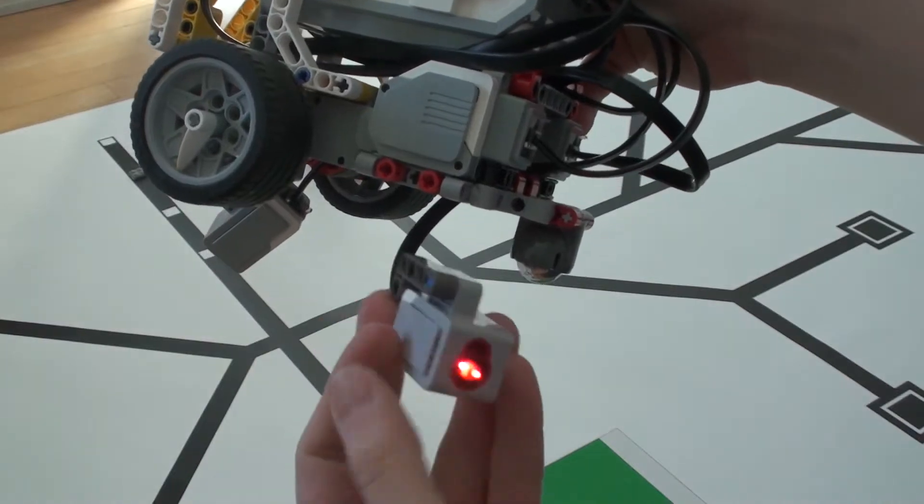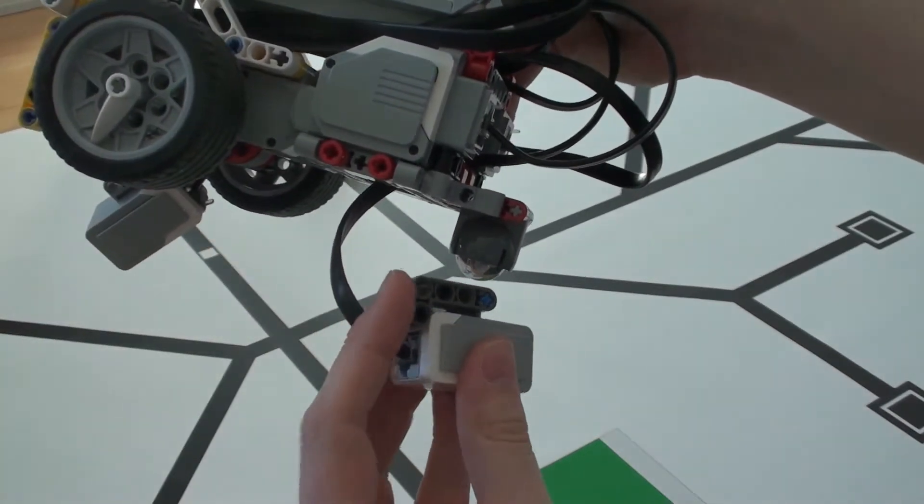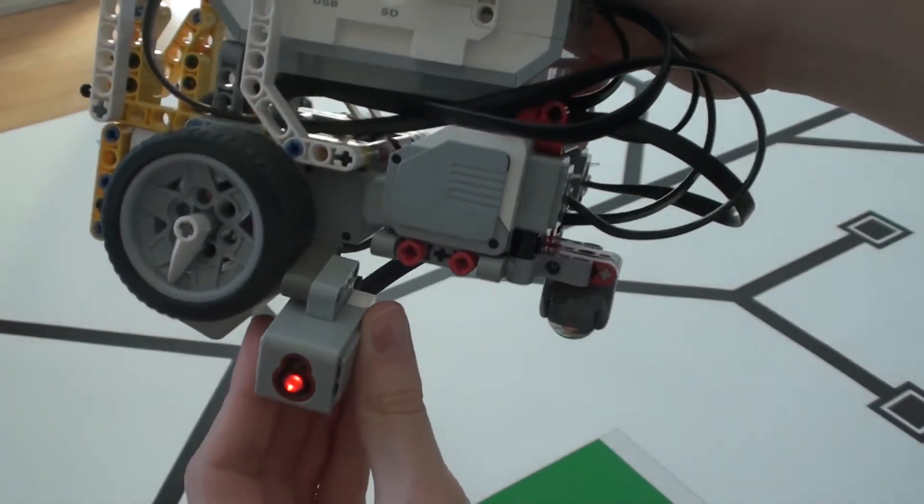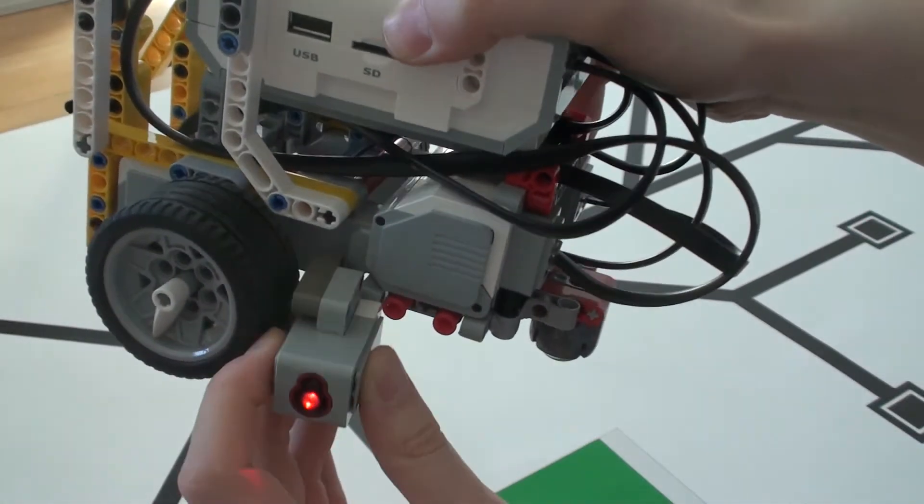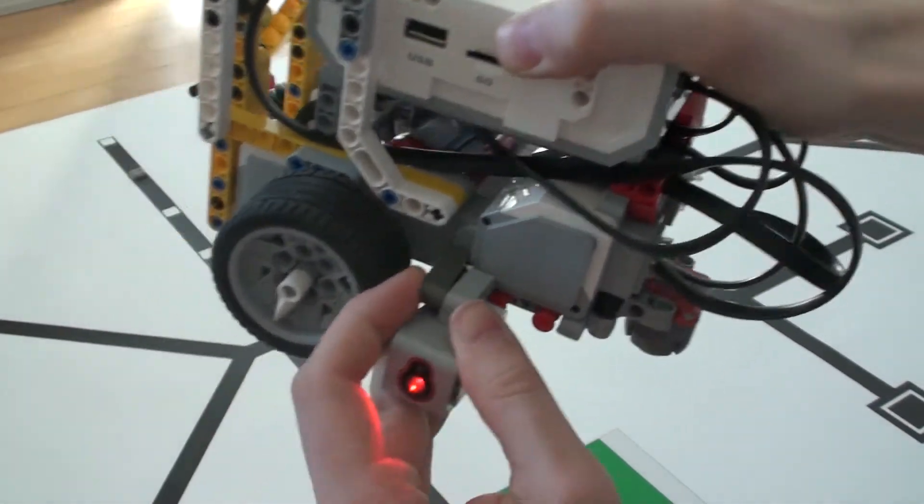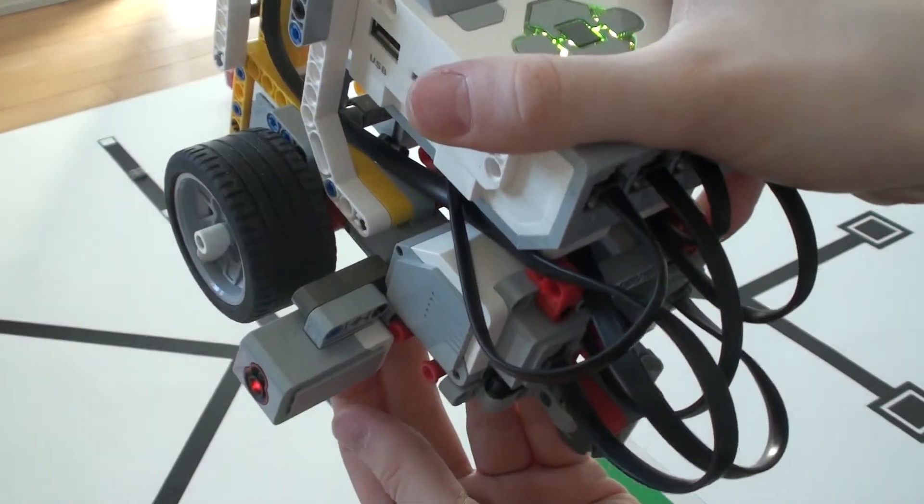The sensor on the side is simply attached like this and it is connected to sensor port number two. So it simply attaches like that, quite simple.